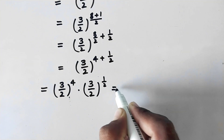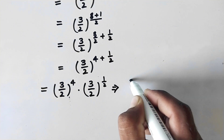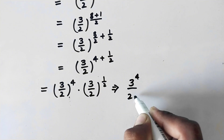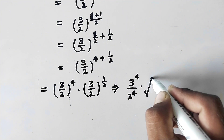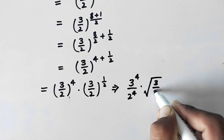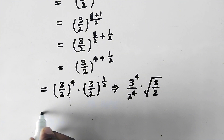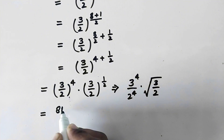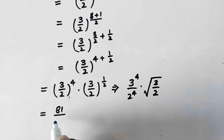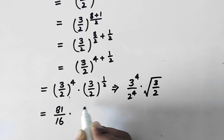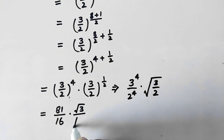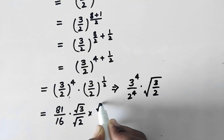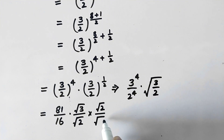And now this implies that 3 to power 4 over 2 to power 4, times 3 over 2 to power 1 over 2, which can be written as square root of 3 over 2. So now this will be equal to 3 to power 4 which is 81, divided by 2 to power 4 which is 16, times square root of 3 over 2, which will be written as square root of 3 divided by square root of 2. Now we will multiply it with square root of 2 over square root of 2.